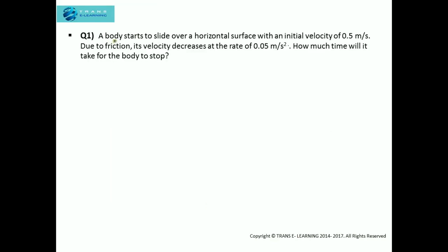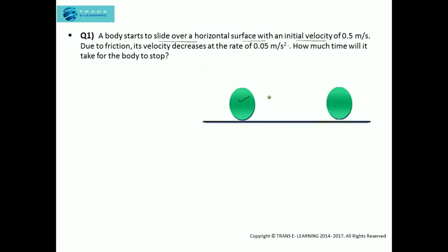The first question: a body starts to slide over a horizontal surface with an initial velocity of 0.5 meter per second. You can see a body here which starts to slide over a horizontal surface with an initial velocity — that means U is given as 0.5 meter per second. Due to friction, its velocity decreases at the rate of 0.05 meter per second squared.